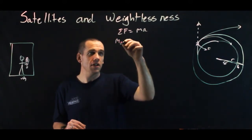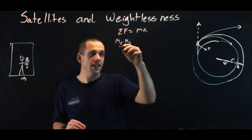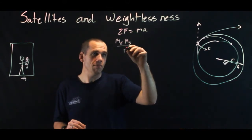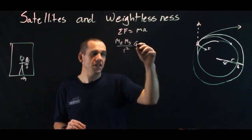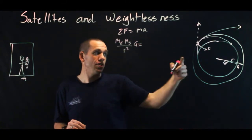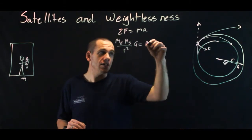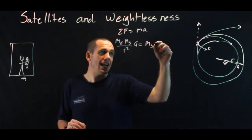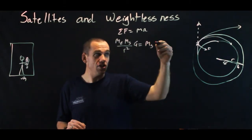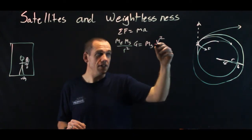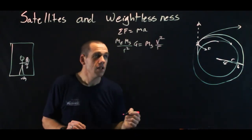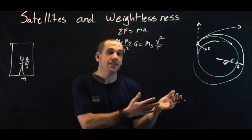And that net force is caused by the universal gravitational force. So that would be the mass of the Earth times the mass of the satellite divided by the distance between them squared times the universal gravitational constant G, is equal to the mass of the object that is being accelerated. In this reference frame, that's the satellite. So the mass of the satellite times the acceleration. But the acceleration is centripetal acceleration, so that would be v squared over r.